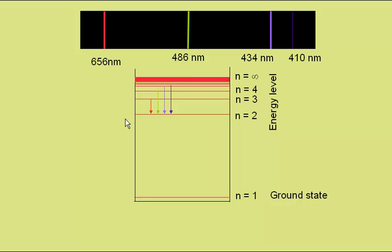How these lines come about is from different energy level drops. So here we have our energy level diagram again, with some details missing for clarity. The red line here equates to a drop from n equals 3 to n equals 2. The green line from n equals 4 to n equals 2, and so on.